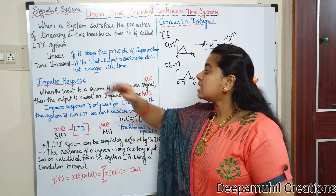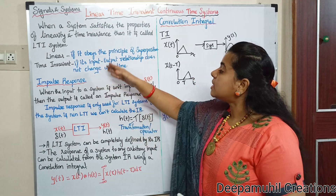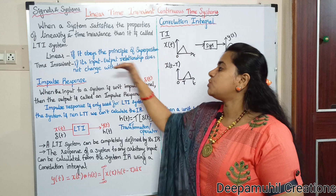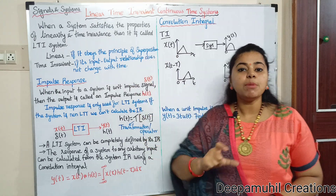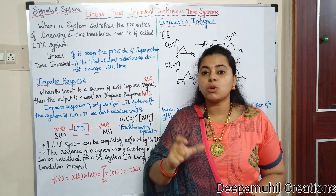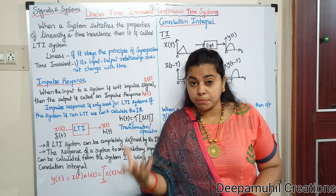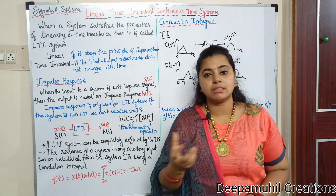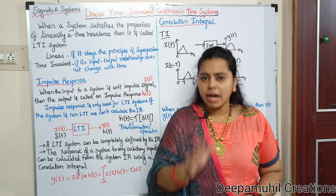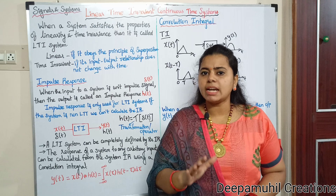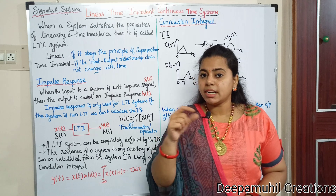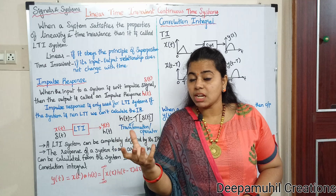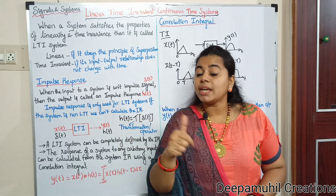Next, the time-invariant system. If its input-output relationship does not change with time, that is called a time-invariant system. If the relationship changes with time, it is a time-variant system.